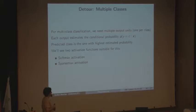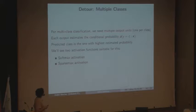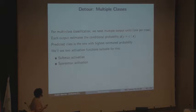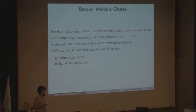This shows how to build a neural network with a single hidden layer for binary classification. But in practice, many problems involve predicting multiple classes, like the topic classification example shown earlier. To do multi-class classification, we need more than one output unit — one per class. For example, in topic classification: one unit for sports, another for politics, another for technology, and so on. One way to do this is to have each output estimate the conditional probability of that class given the inputs, and predict the class with the highest estimated probability.